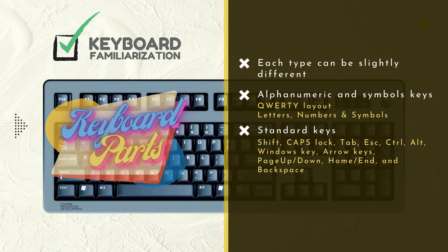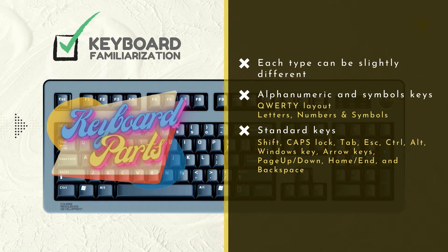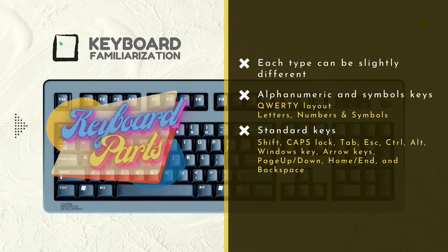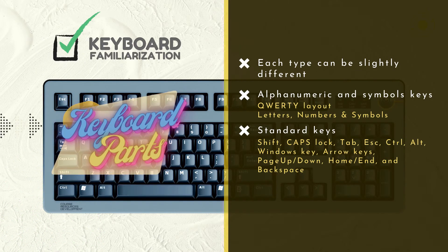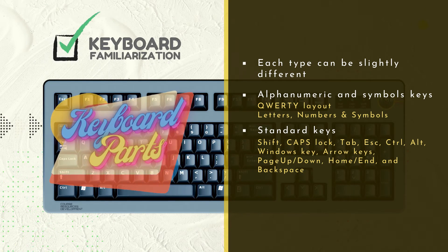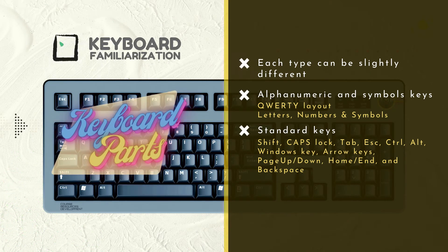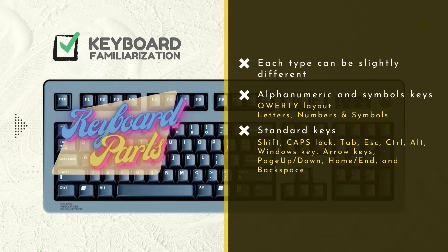The Tab key can be used, but it does different things. It can either move you across the page if you're doing word processing, or it can skip you from field to field when you're filling out something like an online form. As we work through this course, we'll talk about many of these keys and how they can be used as shortcuts for menu commands.